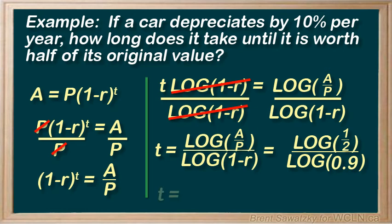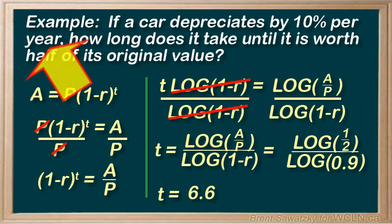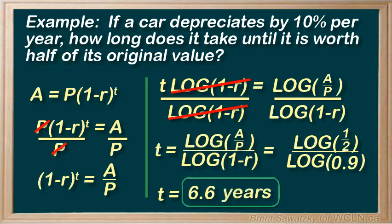And we pull out the calculator, and we get 6.6. And that's the number of compounding periods remember. So we have to look back, and we see that we compound each year. So that clarifies our answer. The answer is 6.6 years.